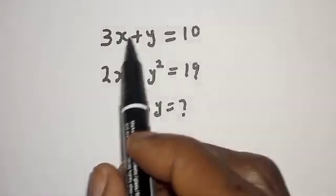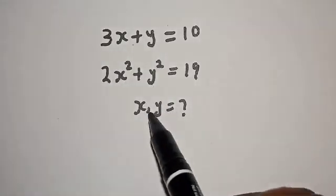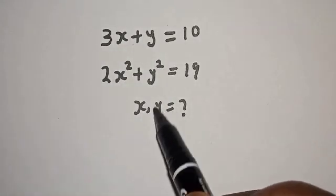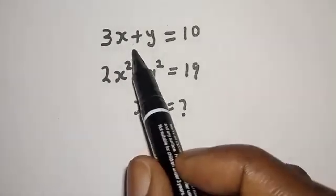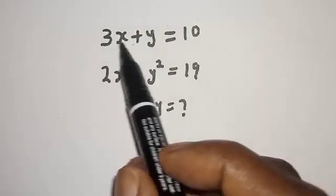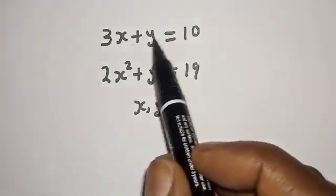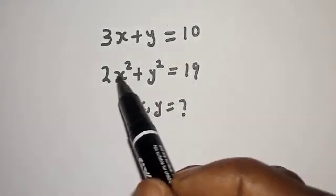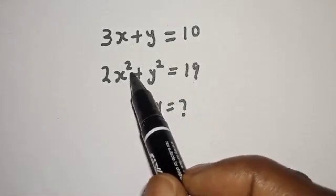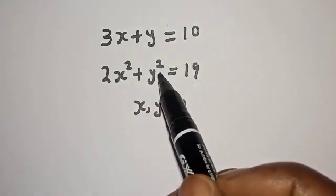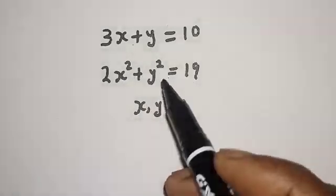Hi everyone, welcome to my class. In this class we want to find the value of x and y from these equations: 3x plus y is equal to 10, and 2x squared plus y squared is equal to 19.